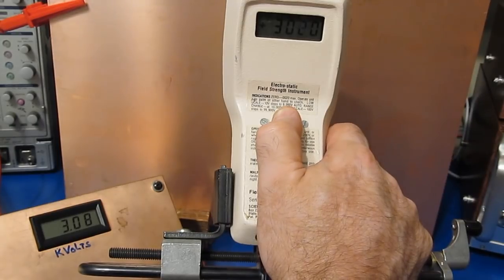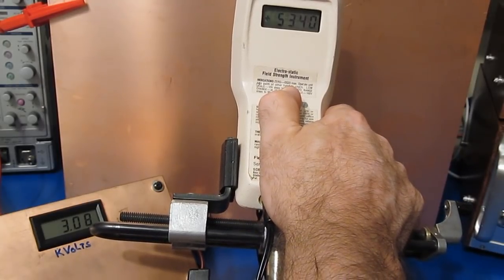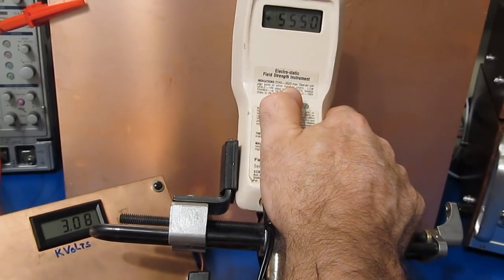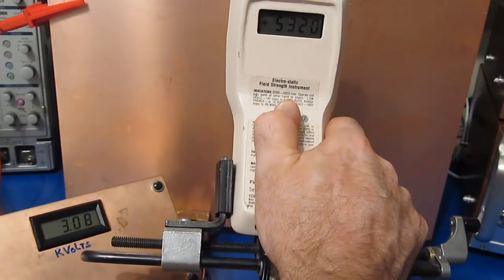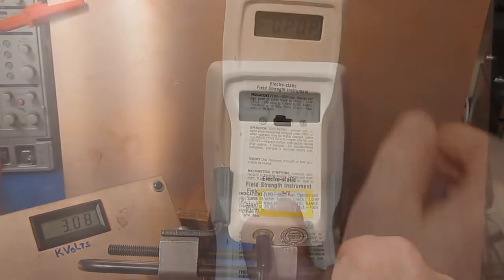You can see we're at roughly 3008 volts, and our meter is reading 3010. Again, this is totally non-contact. It is dependent on the distance, so if I were to move this thing closer you can see the voltage is going up. There's roughly 5500 volts.